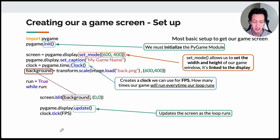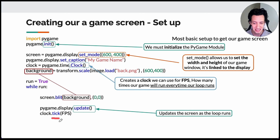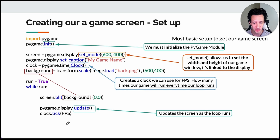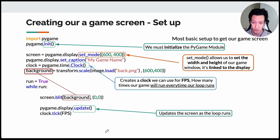The very last two lines of our code: every time the loop runs, update the display using the update method from Pygame, then use the clock object with the tick method, passing in an integer for how many frames per second you want it to update. If you put all this code into VS Code with an image, you'd see a screen appear with that image in the background.